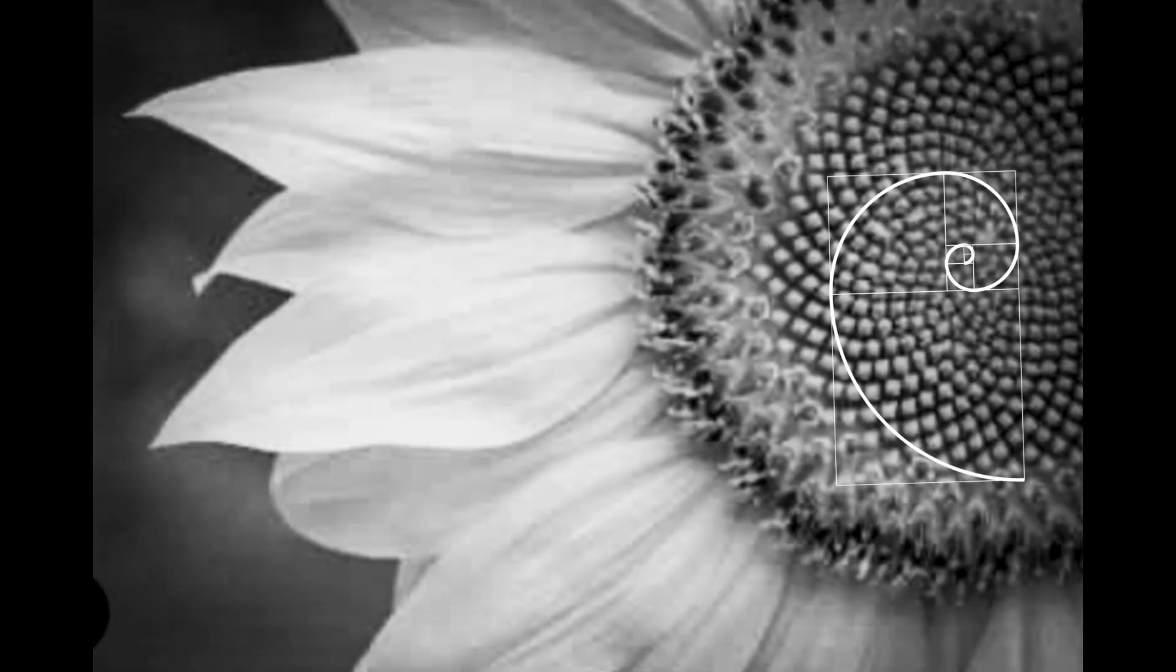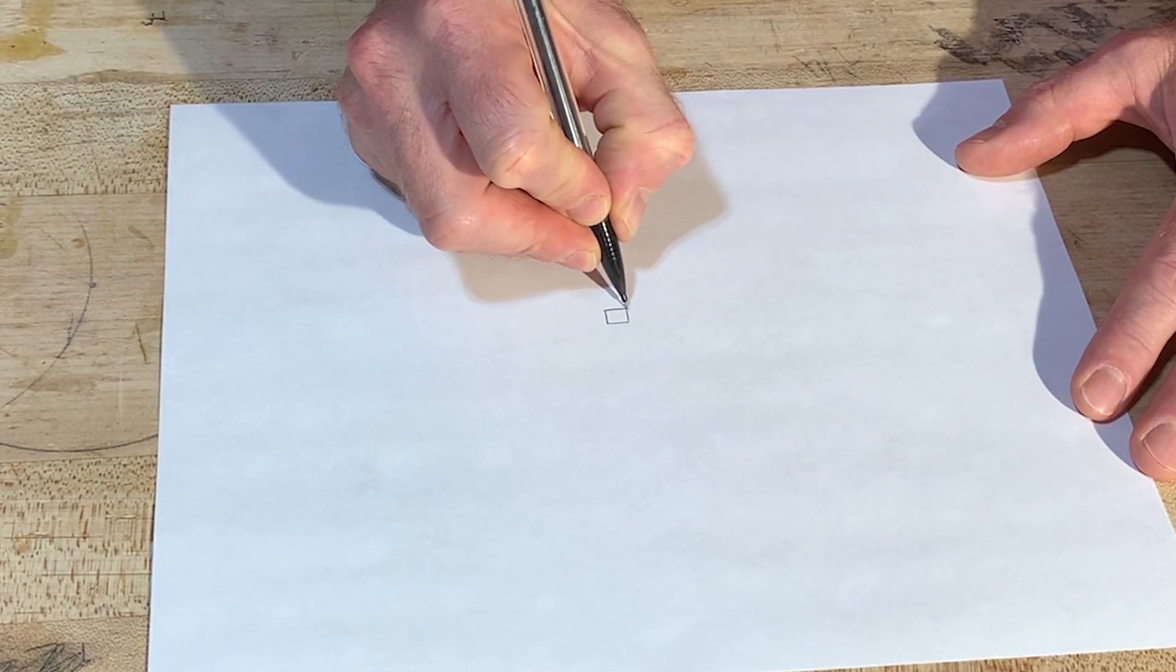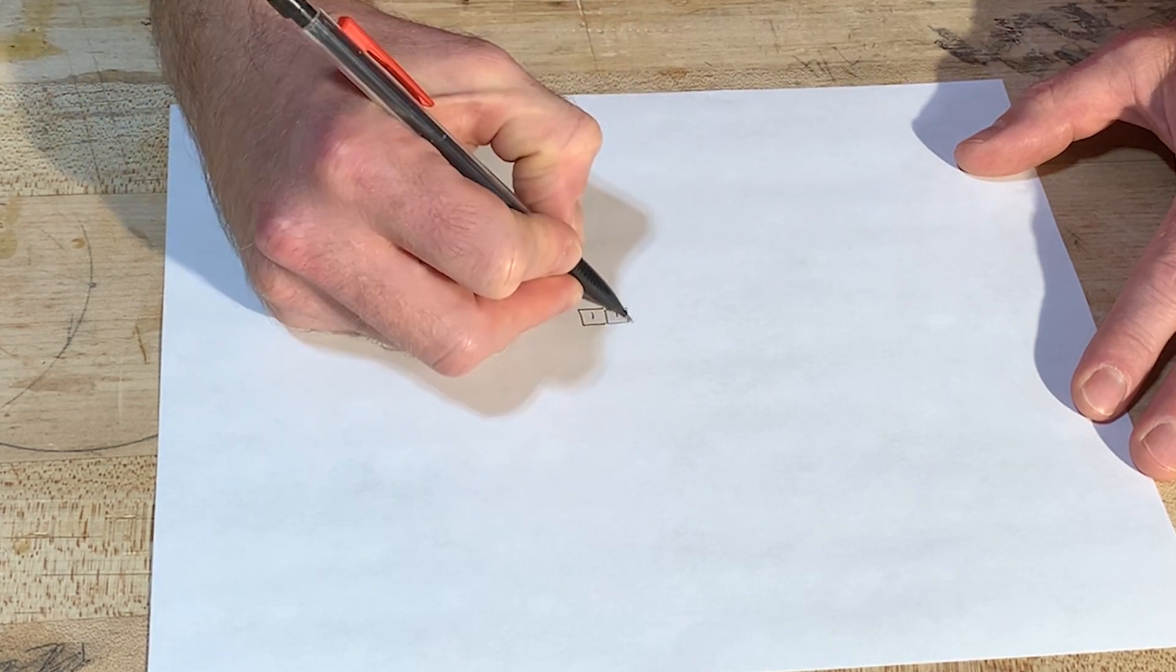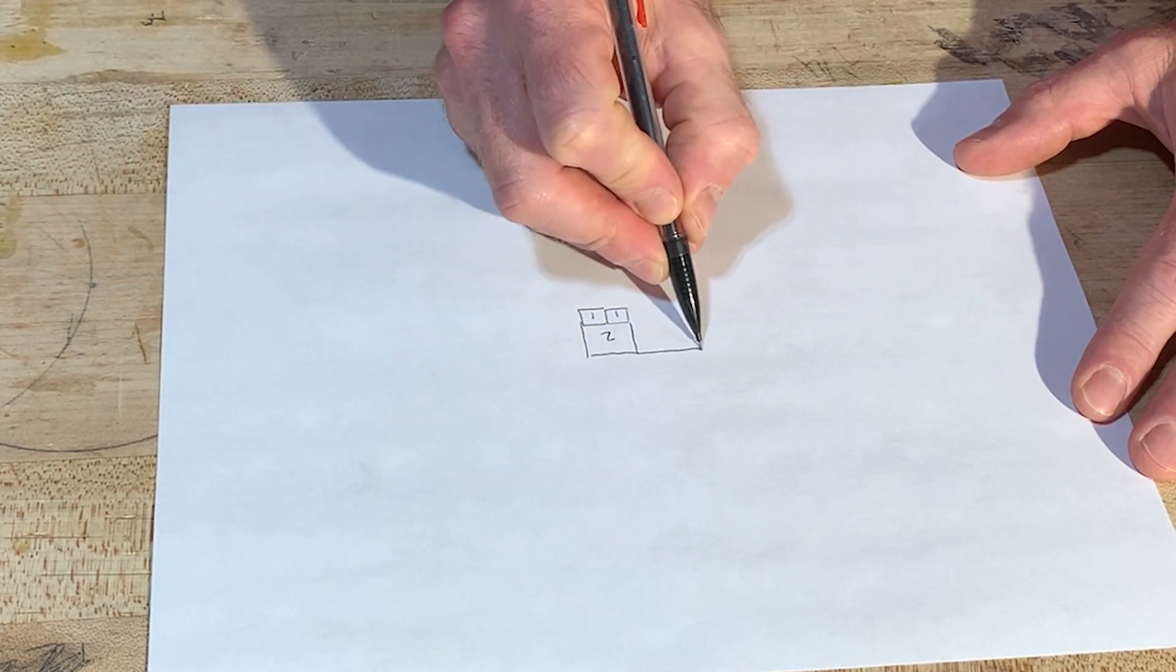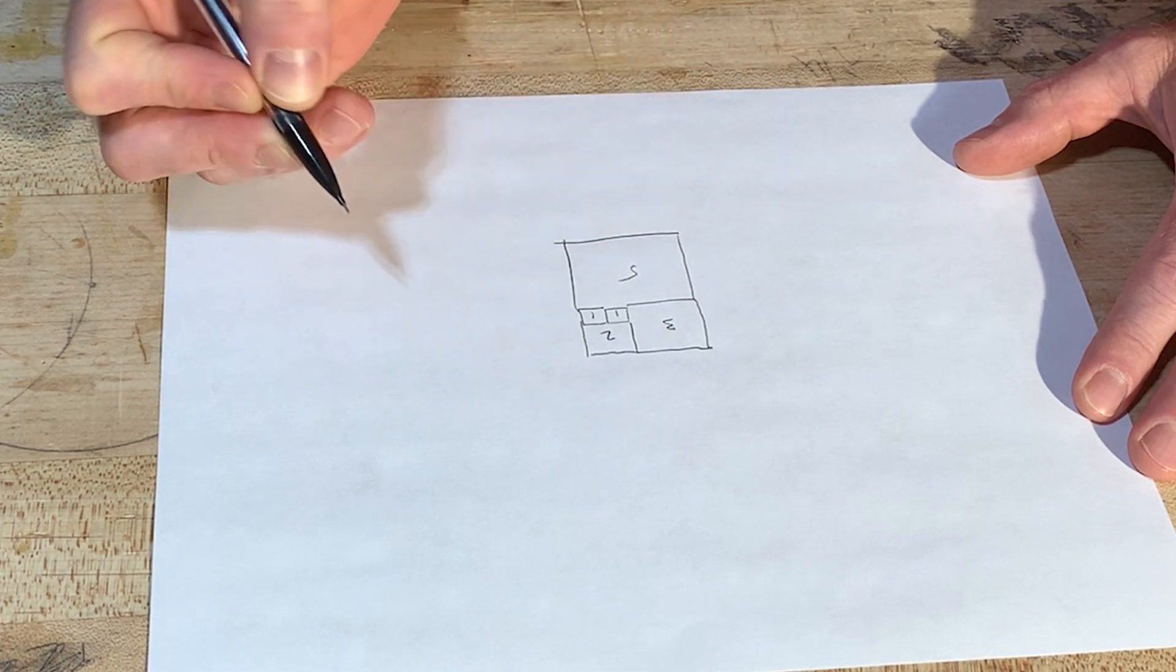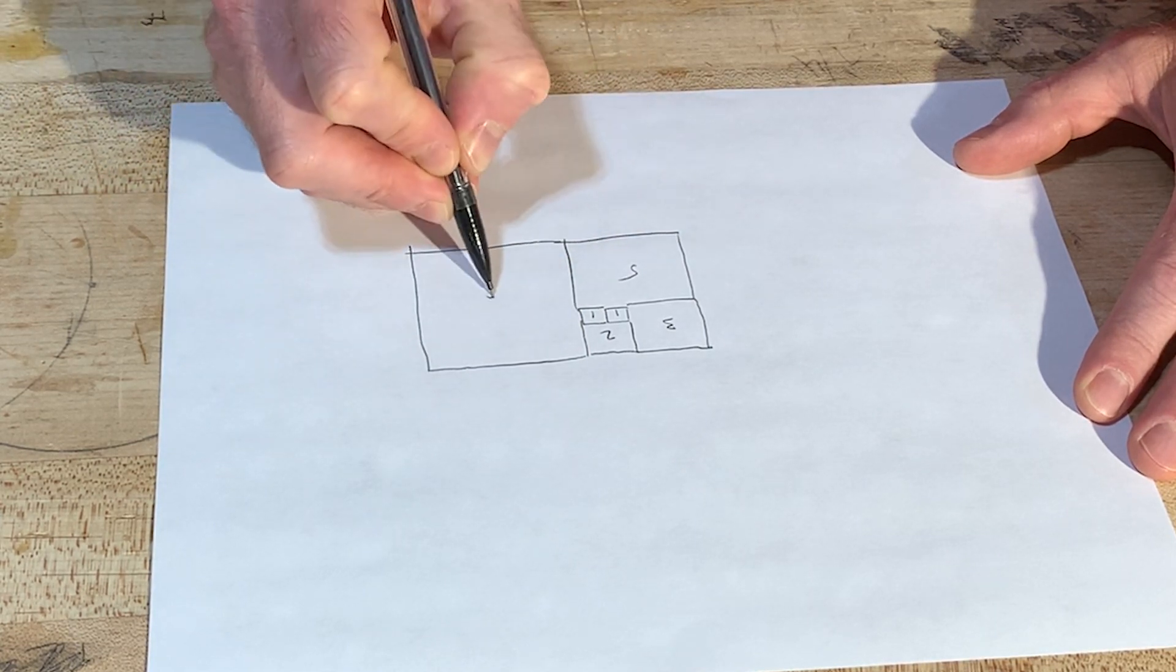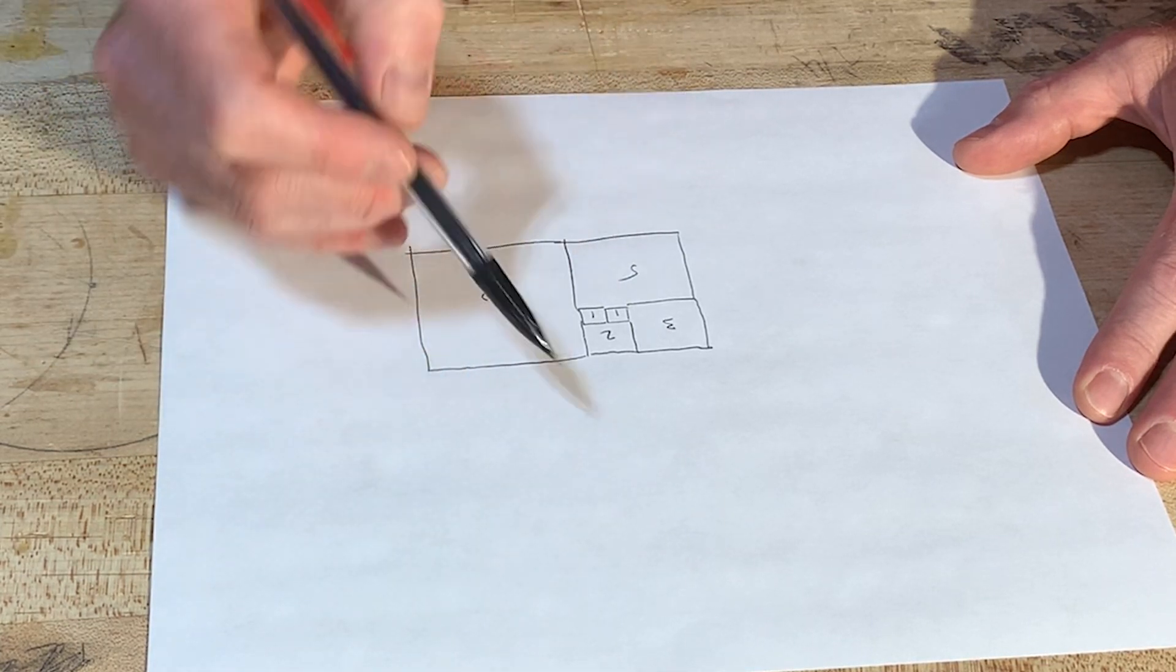Now let's look at this golden spiral. So if you wanted to construct the Fibonacci sequence, you'd start with like a one by one squares. Those are both one. You'd one plus one is two, two by two square, right? Three by three square, five by five square, eight by eight square, right? See how that's all going?